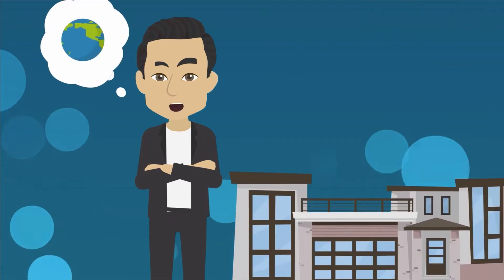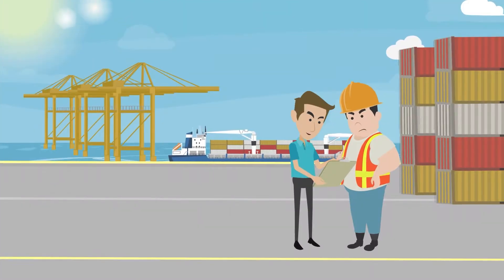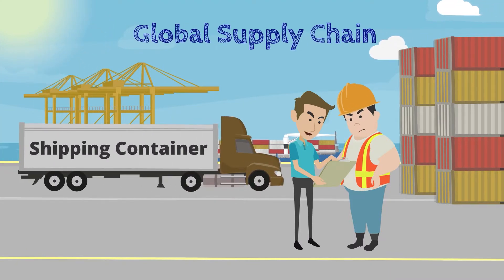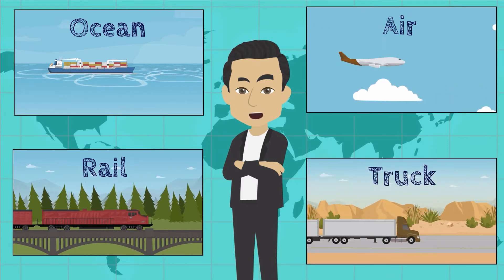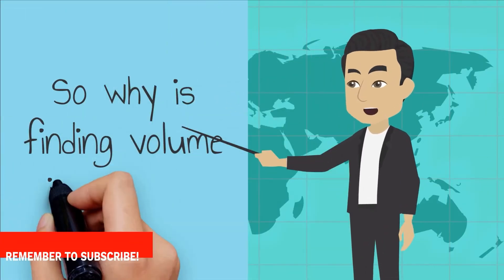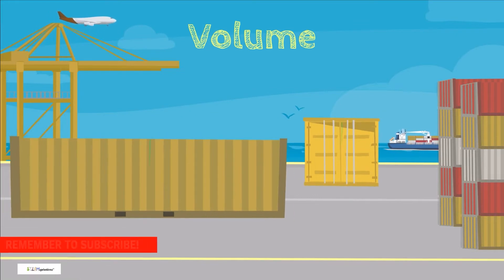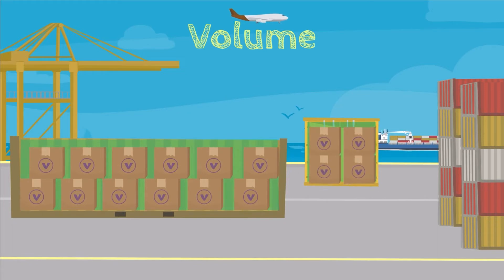So how is finding the volume of a rectangular prism used in everyday life? One example is in the global supply chain. Rectangular shipping containers are standard vessels that help companies transport goods around the world. Ocean freight, air, rail, and truck transportation are some of the many methods of transporting cargo. Knowing the volume of a shipping container is important in transportation because it allows companies to know how much can fit into a container and its capacity.